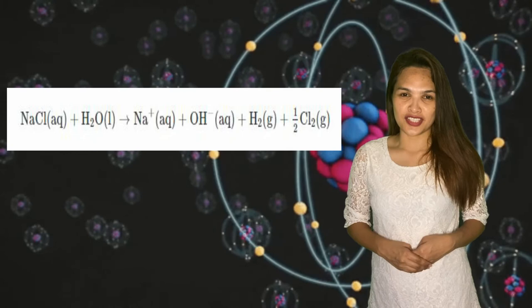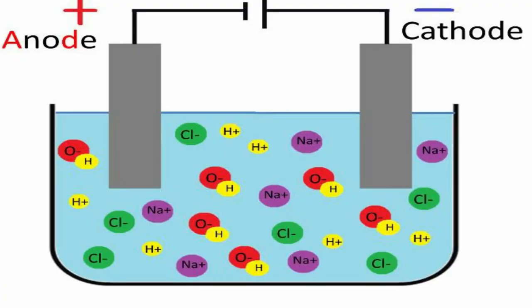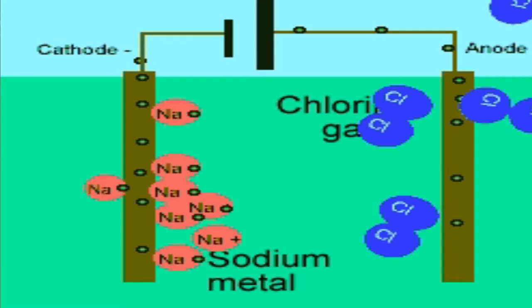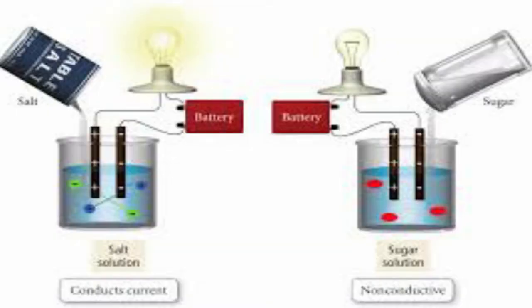Chlorine that's in group 17, sometimes called 7A, forms ion with 1- ionic charge. We should write AQ after this to show that they are aqueous, dissolved in water. So NaCl or sodium chloride is an electrolyte.